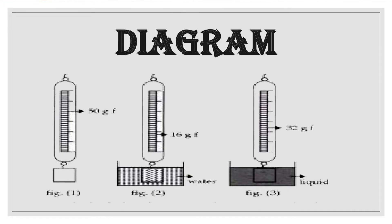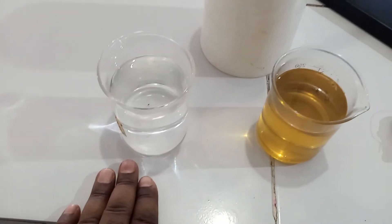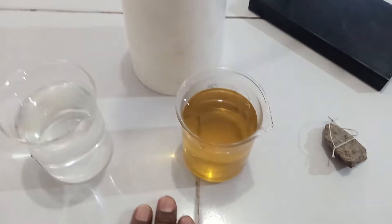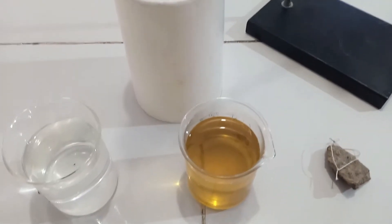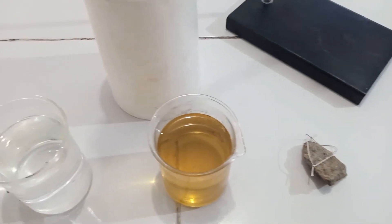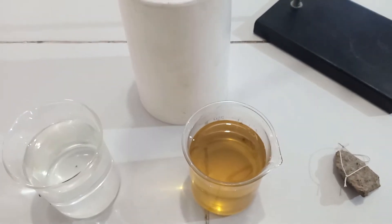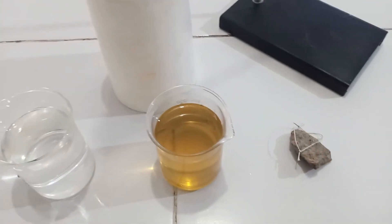The procedure will be: find the weight of this particular object in air and record it as W1; find its weight in water and record it as W2; find its weight in oil as W3. Then we deduce the upthrust in water and in oil, and with that we can calculate the relative density of the oil using upthrust in oil over upthrust in water.